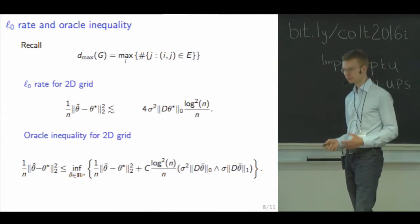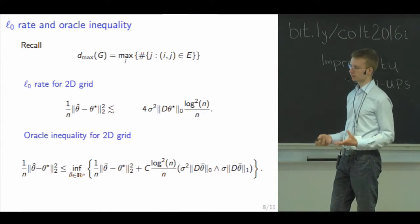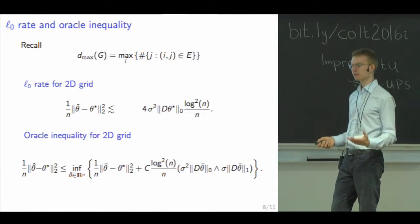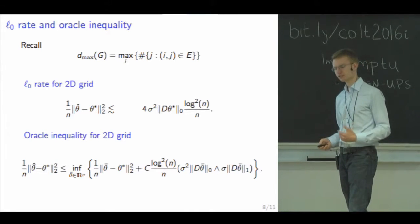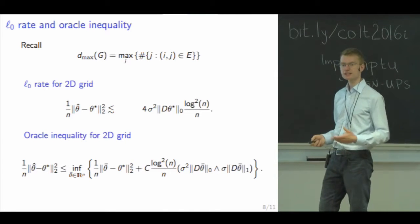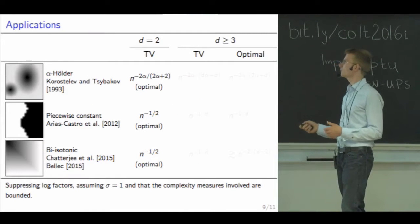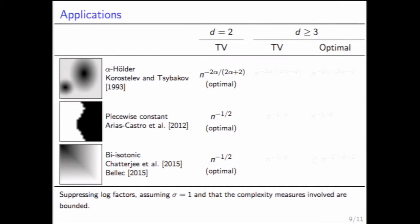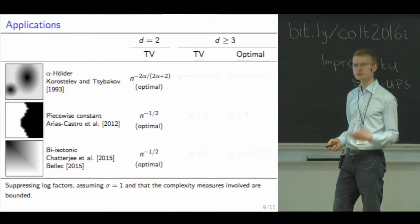We can also allow for misspecification and use this to gain insight into other complexity classes — how does TV regularization perform on Hölder functions? Using our bounds, we find we are near-optimal in a wide variety of complexity classes, including Hölder smooth classes, piecewise constant classes considered in imaging, and isotonic/bisotonic matrices considered in statistics.